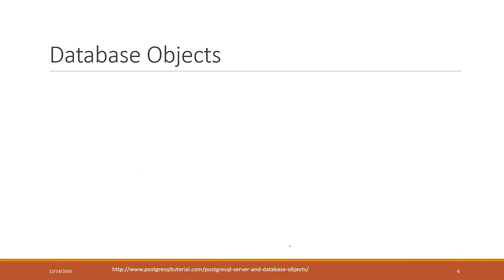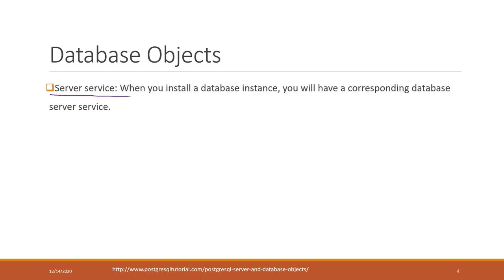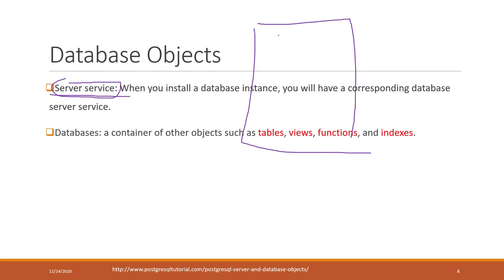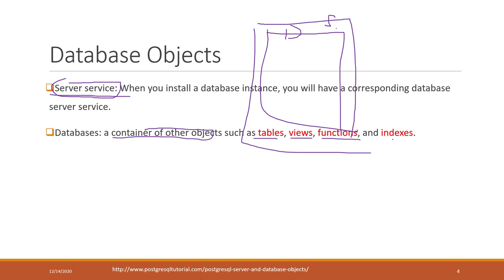Now let's talk about some basic objects and terminologies in the relational database. The first one is a server — a server is just an instance that hosts your database. You may think of it as a computer that hosts your database; a single computer can actually have multiple servers. Within each server you can have multiple databases. A database is a container for other objects such as tables, views, functions, and indexes.